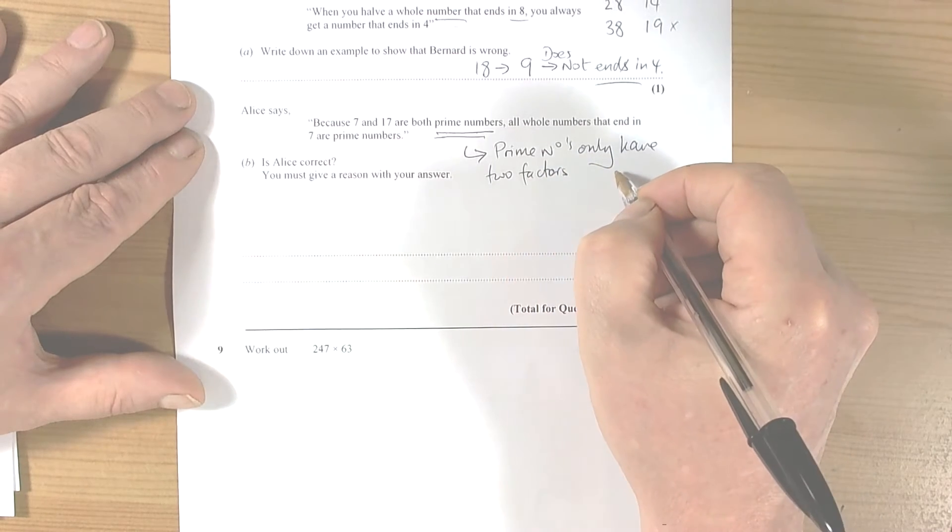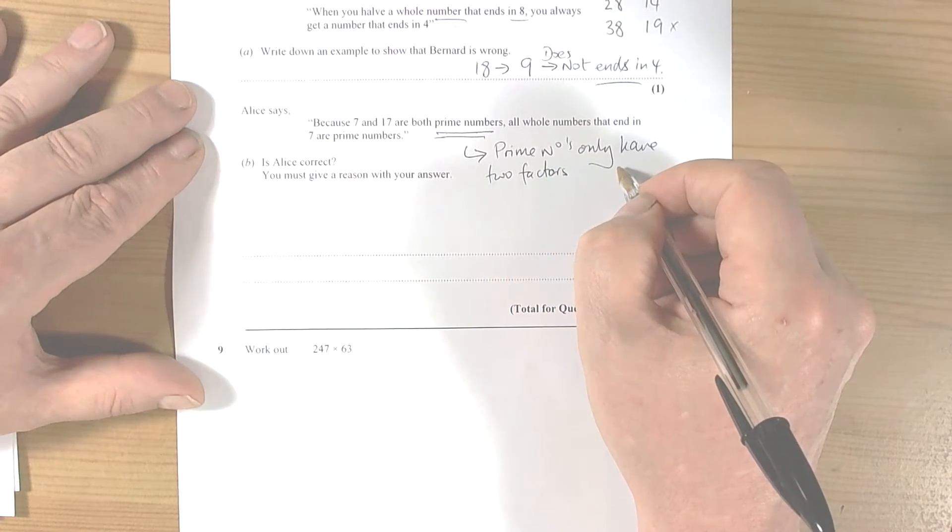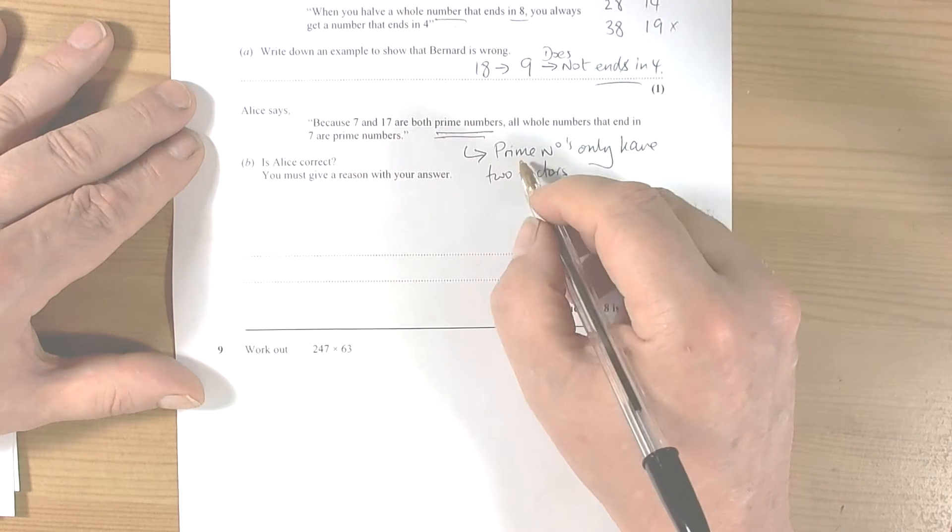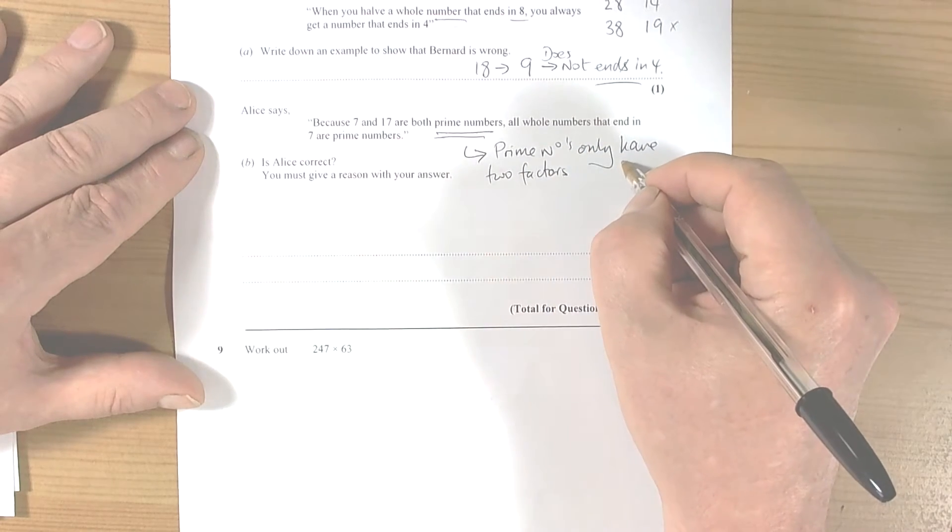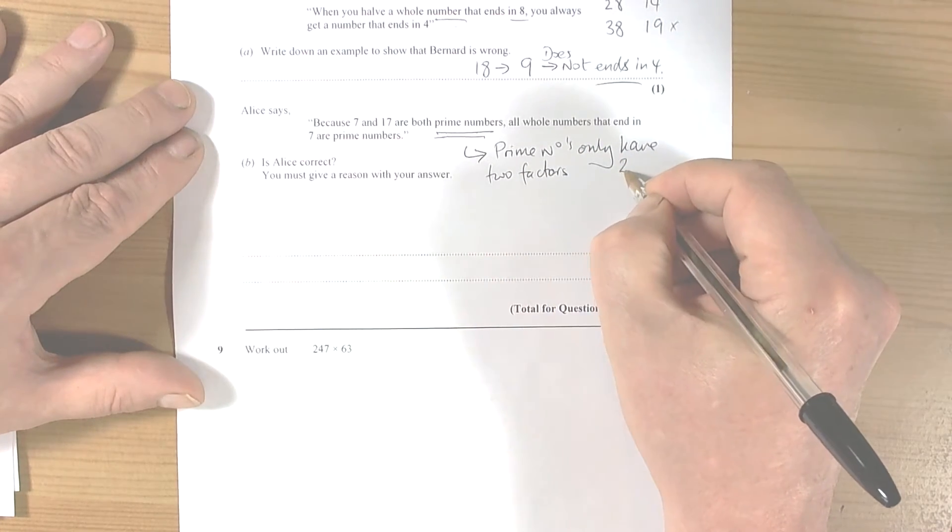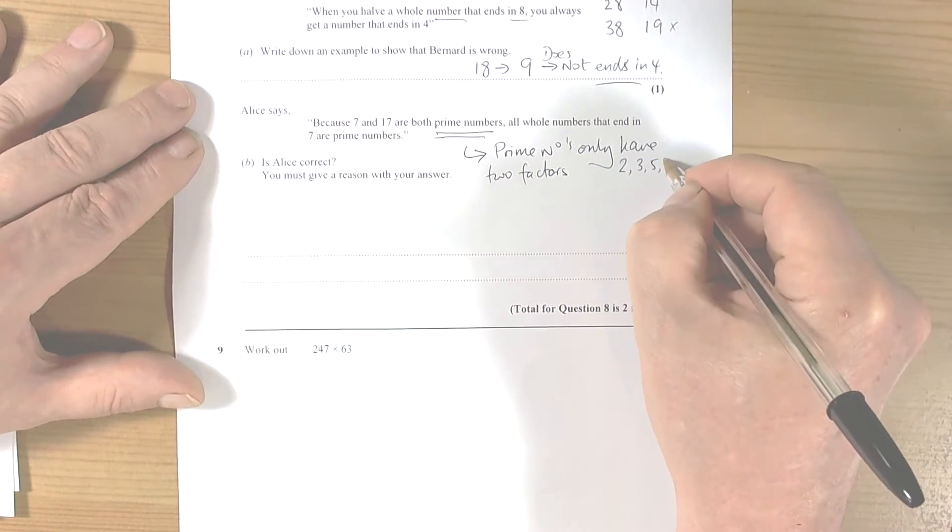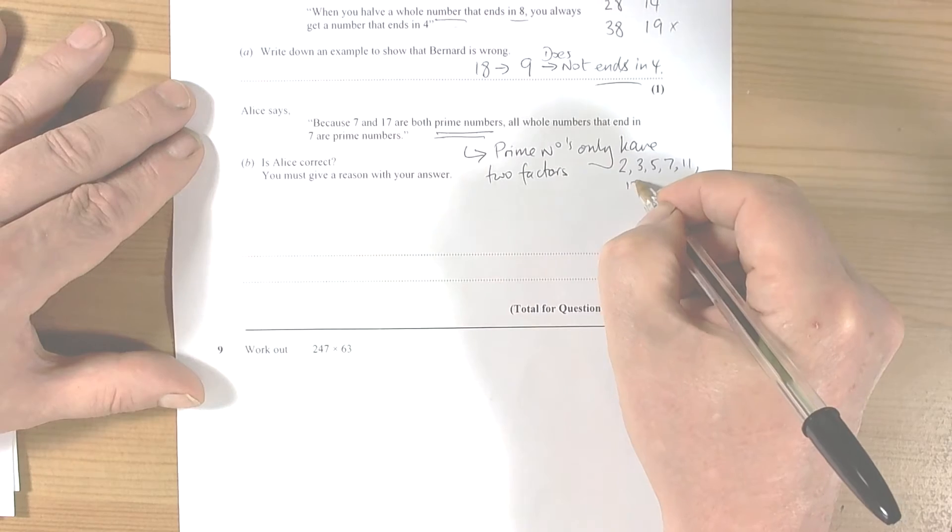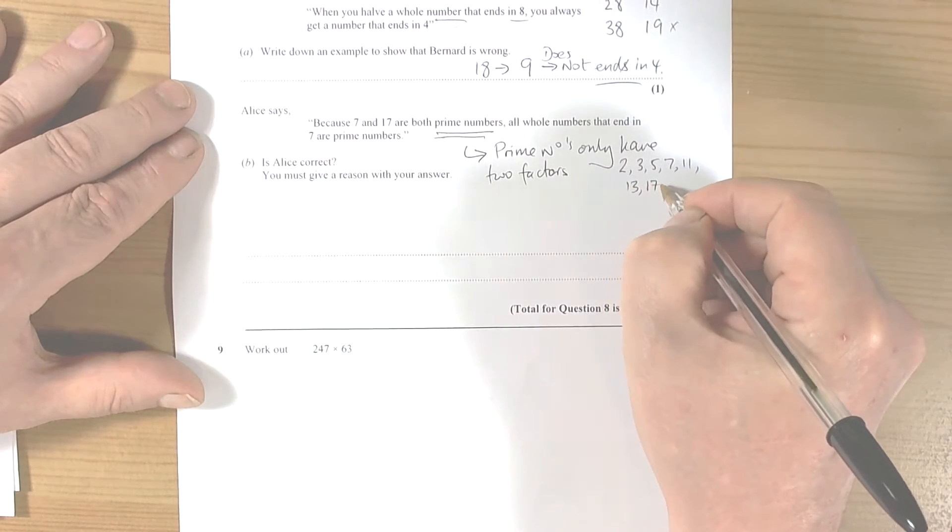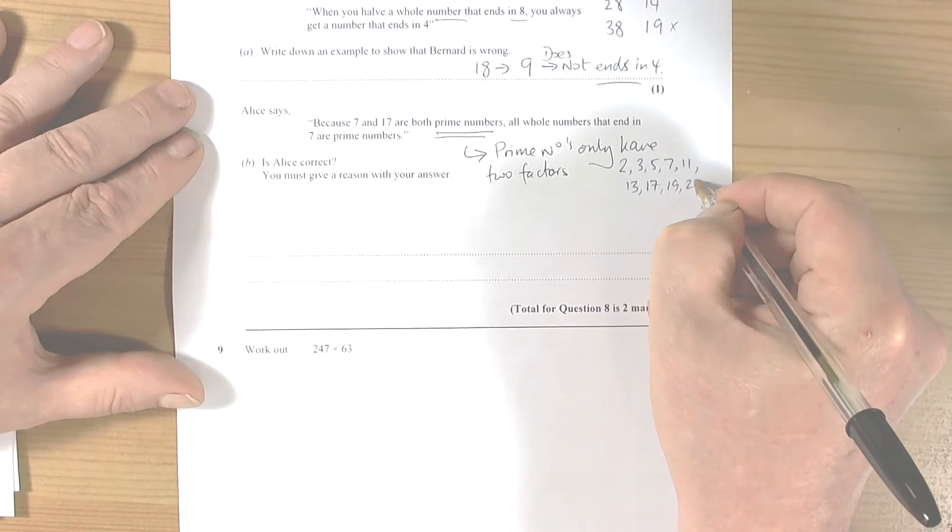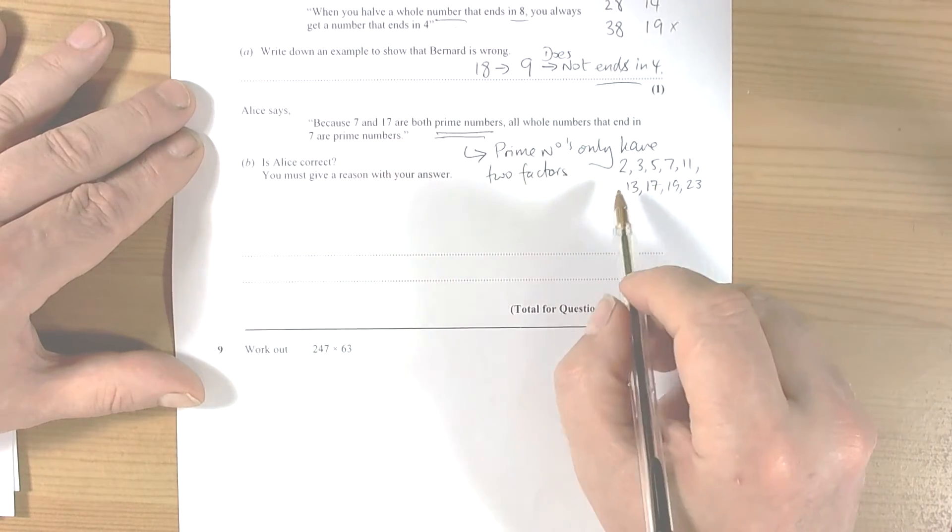And that's why one is not a prime number, because one only has one factor, itself. So prime numbers, you should learn the first 10 prime numbers really guys, so you've got some idea what's going on. So two, three, five, seven, eleven, thirteen, seventeen, nineteen, twenty-three, and so forth.